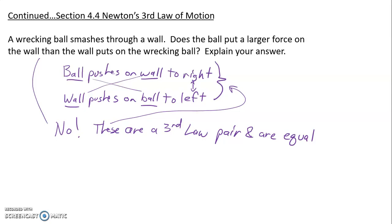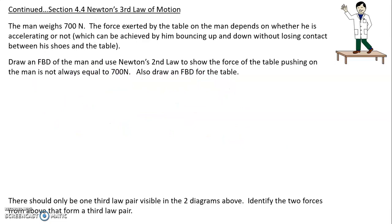All right, let's look at another example. Here we have a man who weighs 700 newtons standing on a table and the force that's exerted on the table by the man depends on whether he's accelerating or not. So he could accelerate by jumping into the air, or by just bouncing up and down, just getting on the balls of your feet and bouncing up and down.